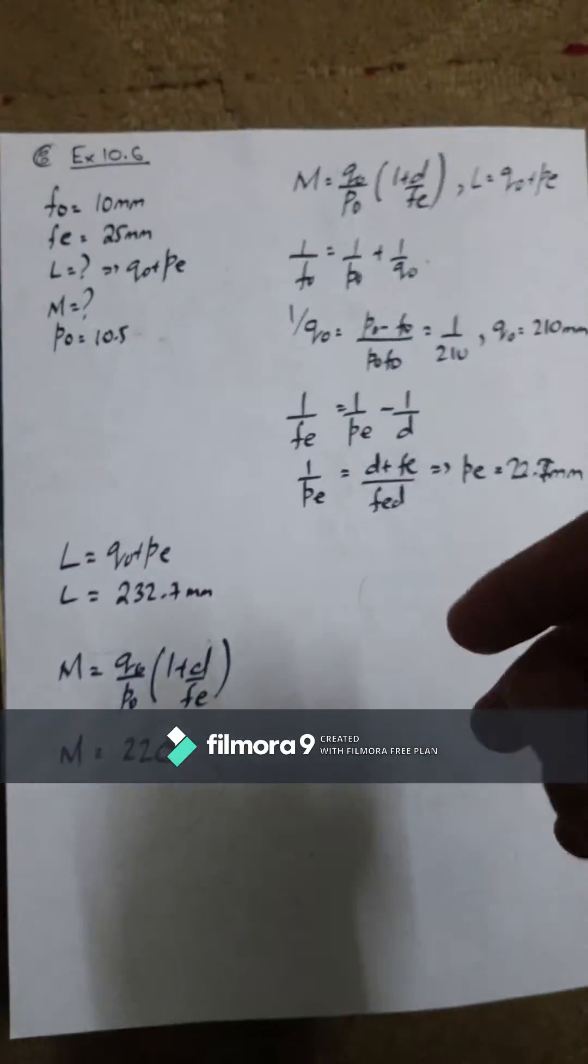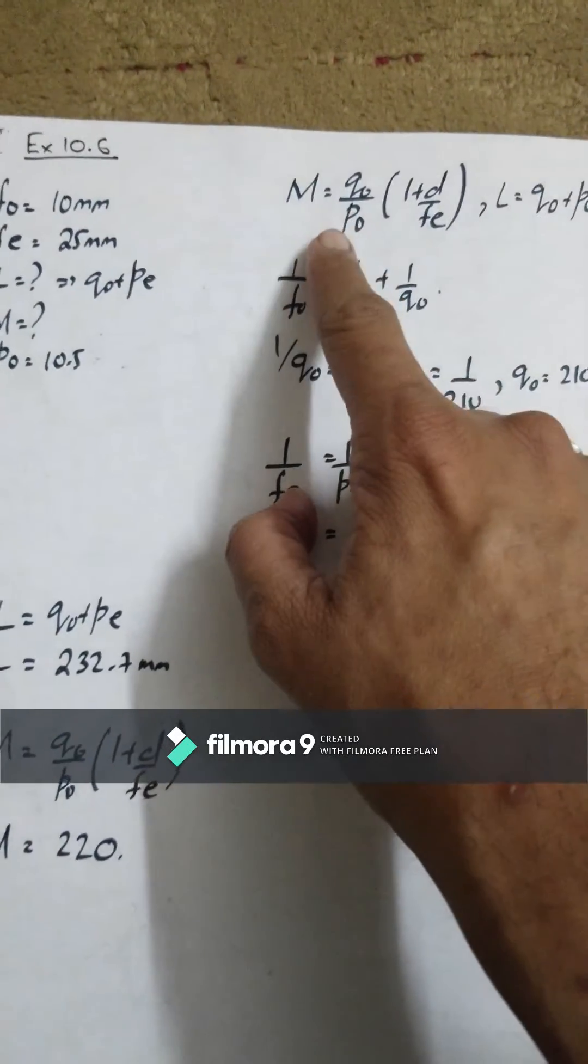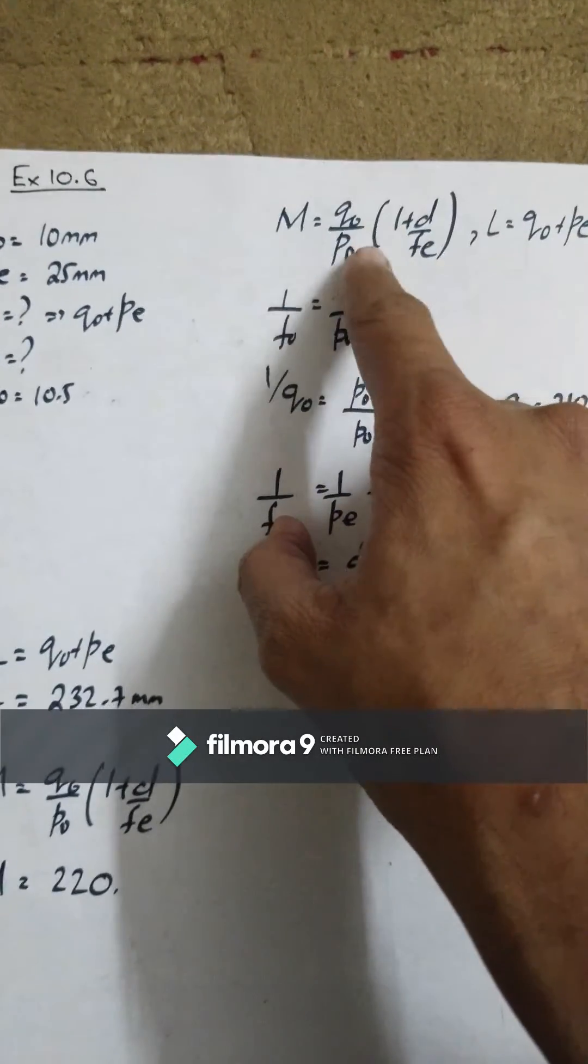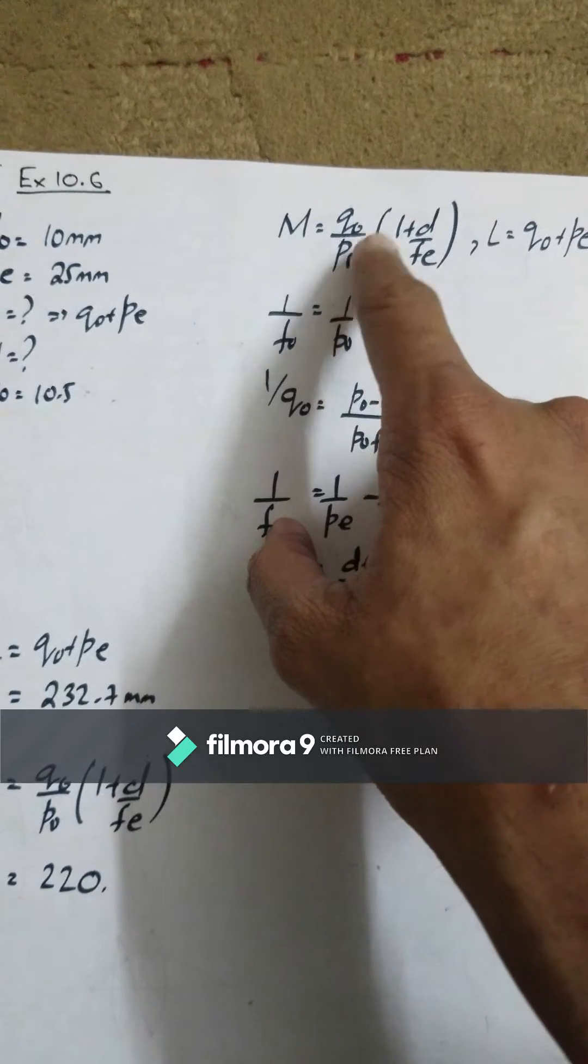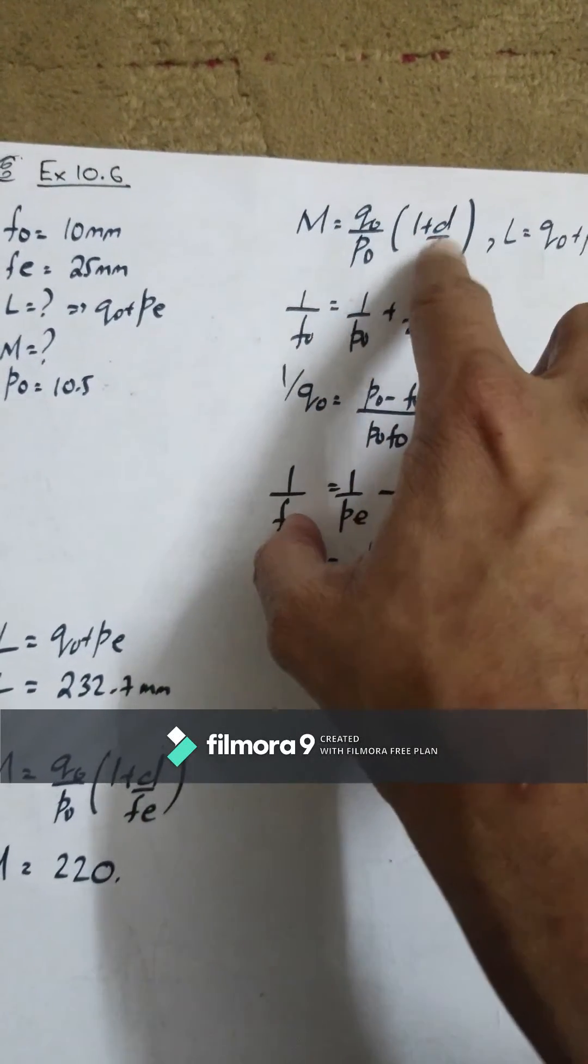The solution is the most simple logic. If you remember that you have the magnification formula, with this formula you will know four things: Q0, P0, D, and Fe.